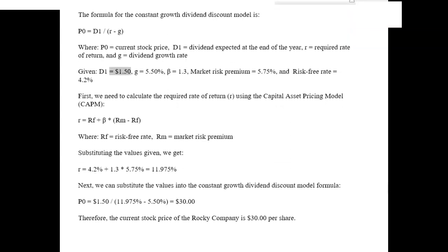Given: D1 equals $1.50, G equals 5.5%, beta equals 1.3, market risk premium equals 5.75%, and risk-free rate equals 4.2%. First, we need to calculate the required rate of return, R, using the capital asset pricing model, CAPM.